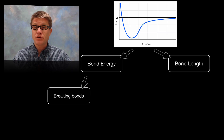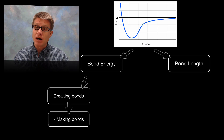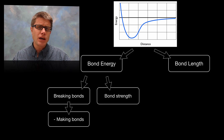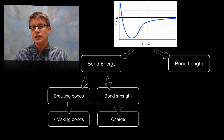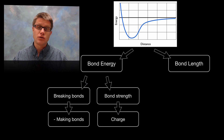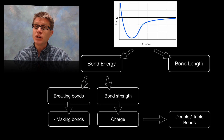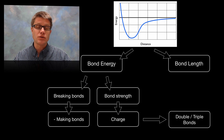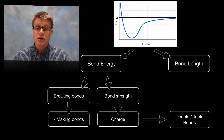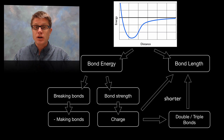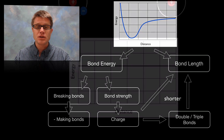The bond energy is simply the energy required to break those atoms apart. Likewise, when we form a bond between the two we're going to release energy — that's the negative bond energy. The strength of that bond is going to be built upon the charges of the atoms themselves. The bigger the charges are, the greater that bond energy is going to be. As we increase the number of electrons in a bond — moving from a single to a double to a triple bond — we're actually increasing the charges, and therefore increasing that bond strength. One interesting thing to note is that as we increase that strength we're going to pull those atoms together and actually decrease the bond length.